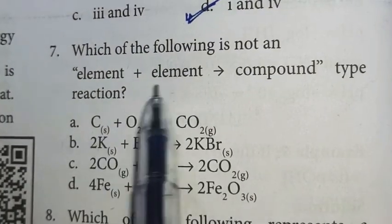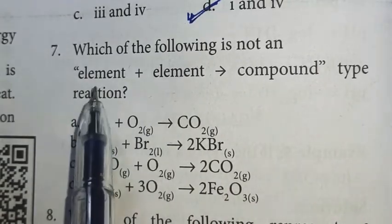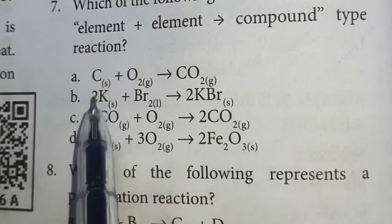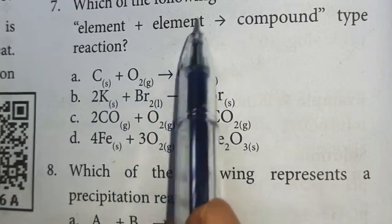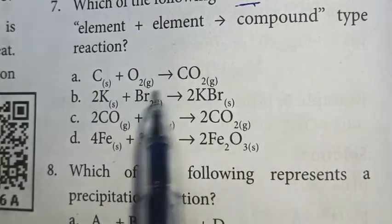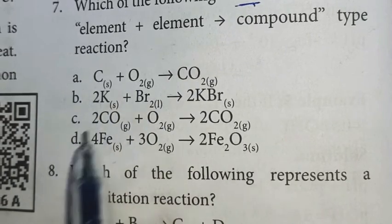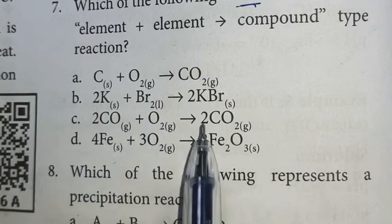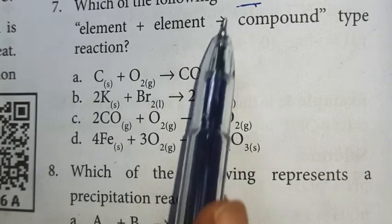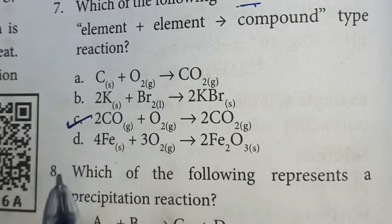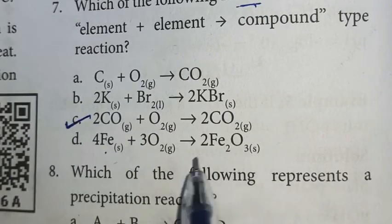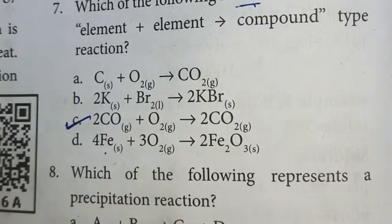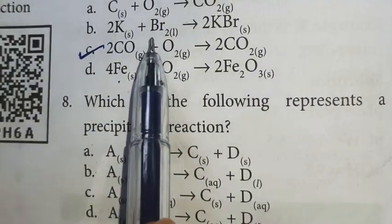Seventh question: Which of the following is not an element plus element gives compound type reaction? First one is correct, second one also correct. But third one, this is compound plus element gives compound, which is not element-element-compound. Fourth one is also element-element gives compound. So option C is not element-element-compound, so option C is the right answer.